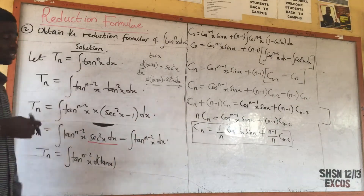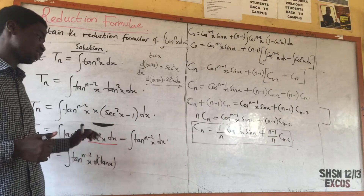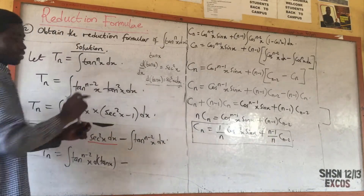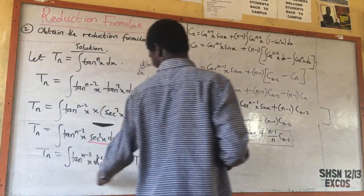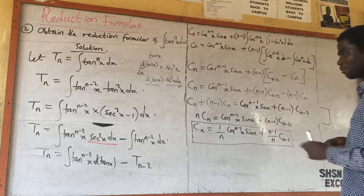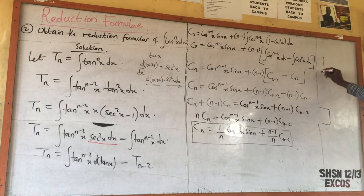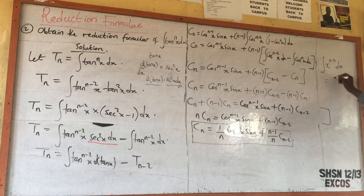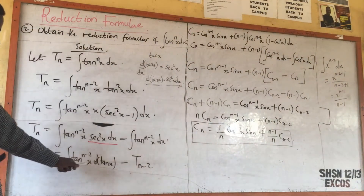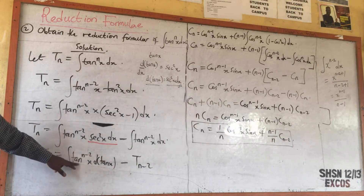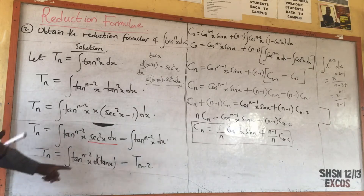The reason I'm showing you this is that we have tan^(n-2)(s) times d(tan s), which is exactly like integrating s^(n-2) ds. In that case, the answer would simply be s^(n-2+1) / (n-2+1), which is s^(n-1) / (n-1). The same principle applies here: tan^(n-2)(s) times d(tan s) is like y^(n-2) dy if we let y = tan(s).